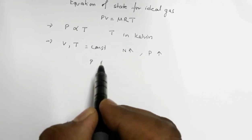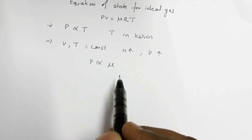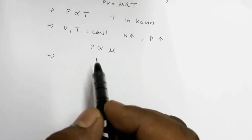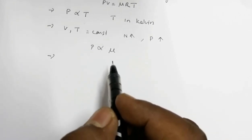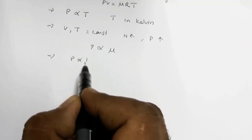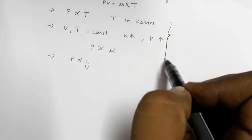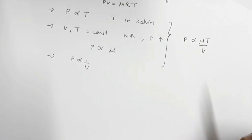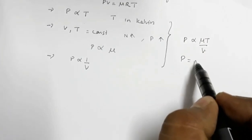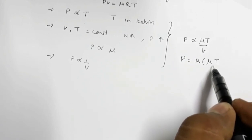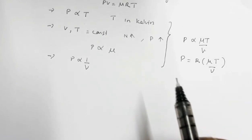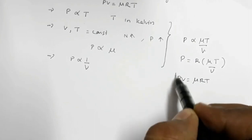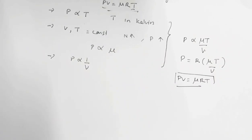The other dependence is between pressure and volume: as pressure increases, volume decreases, so pressure is inversely proportional to volume. Combining these three conditions — P ∝ T, P ∝ μ, and P ∝ 1/V — we get P ∝ μT/V, or P = RμT/V, where R is the gas constant. This gives us PV = μRT, which is the verified equation of state.